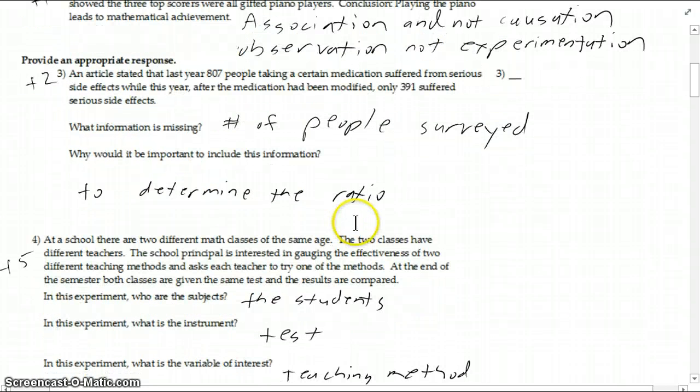Maybe they're really smart. That might lead to the mathematical achievement, not the playing piano part. Or maybe they studied a lot of mathematics. Just whenever we start seeing claims that are causation without experimentation, we've got to be very careful. So that's what I was looking for in number two there.